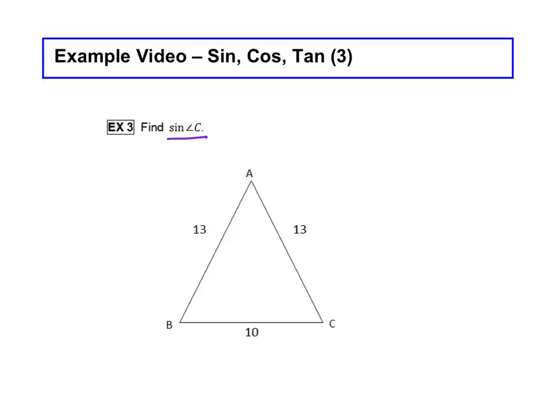Looking at our triangle, we've got side lengths of 13, 13, and 10. What I'm noticing is that there's no right angle in this triangle. Sine, cosine, and tangent only work for right triangles. We talked about that in the intro video. So does that mean we can't even do this problem?